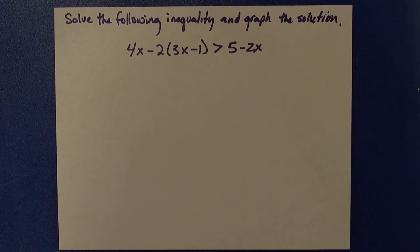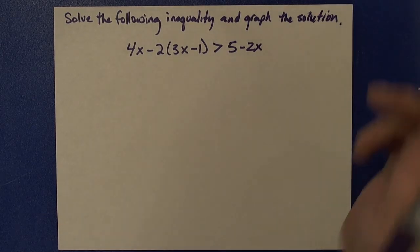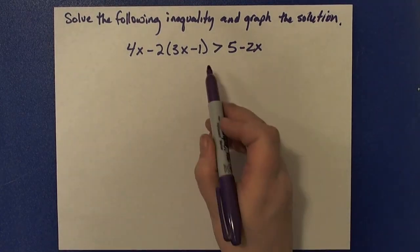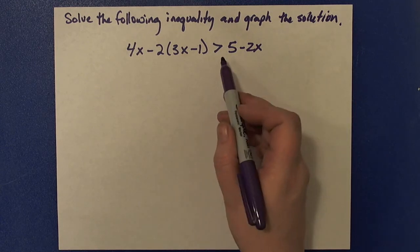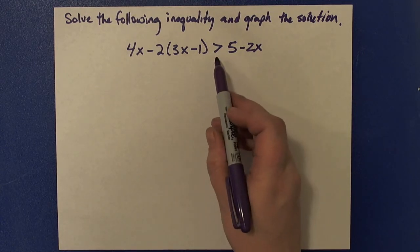When I go about solving an inequality, I use the same rules that I use for solving an equation, with the exception that if I multiply and divide both sides of the inequality by a negative number, then I would switch the direction or the sense of the inequality.